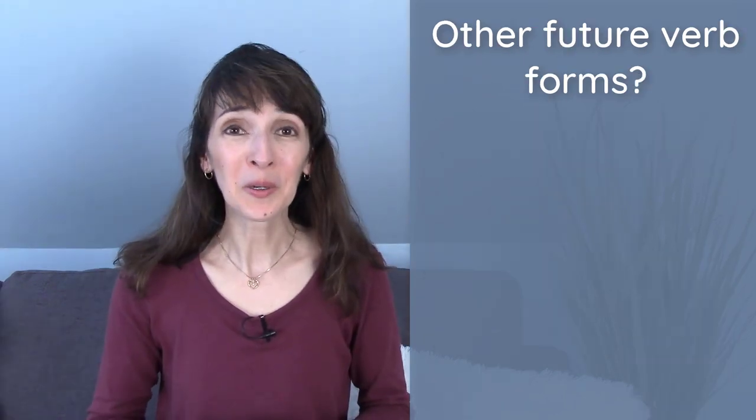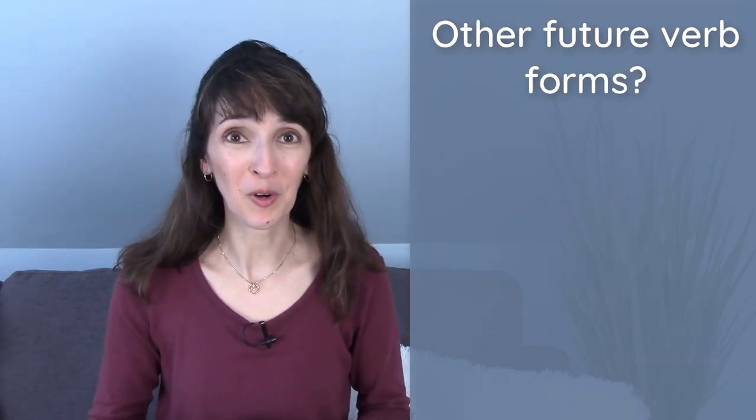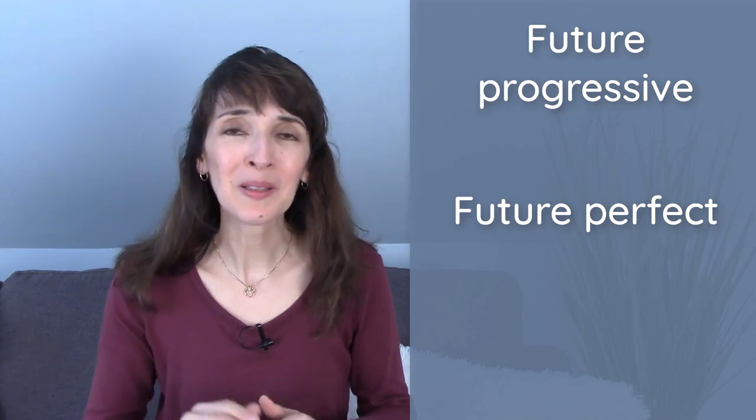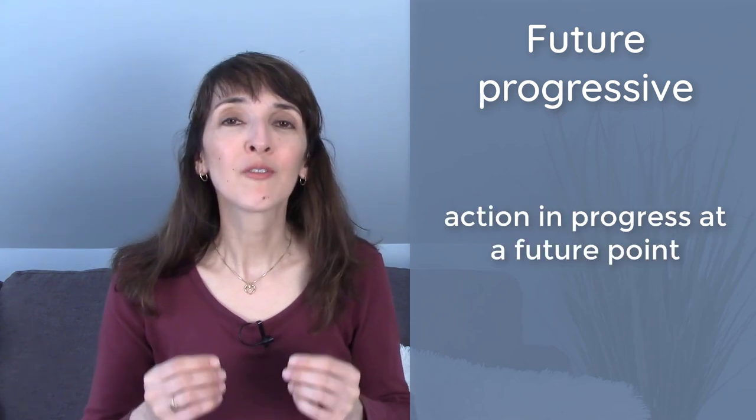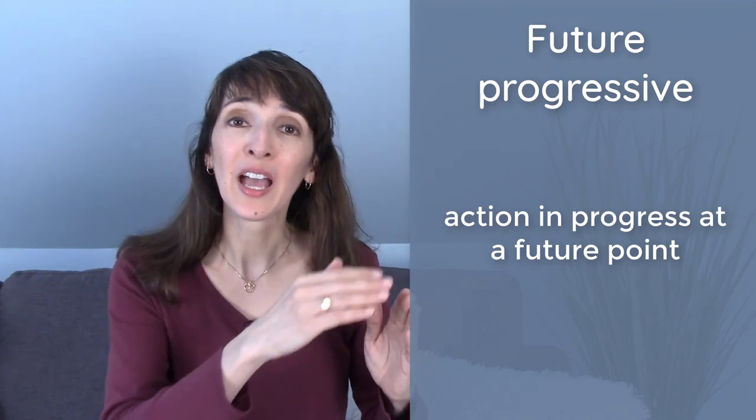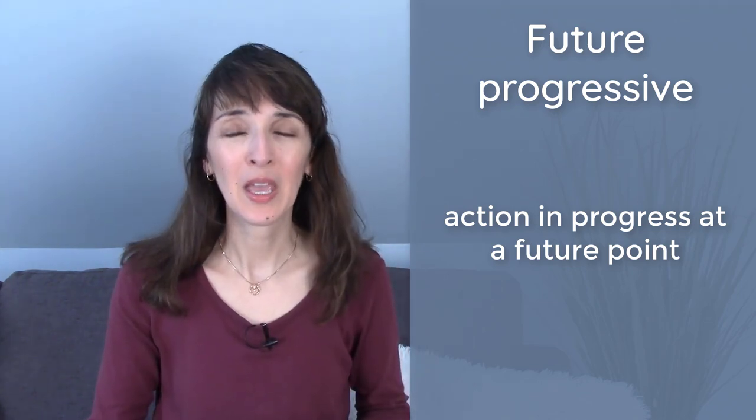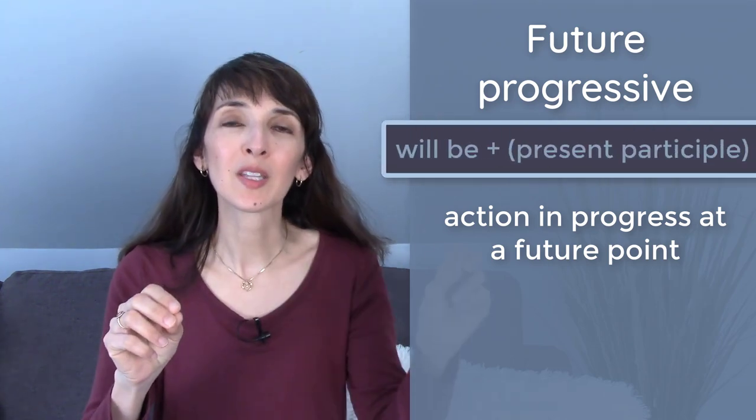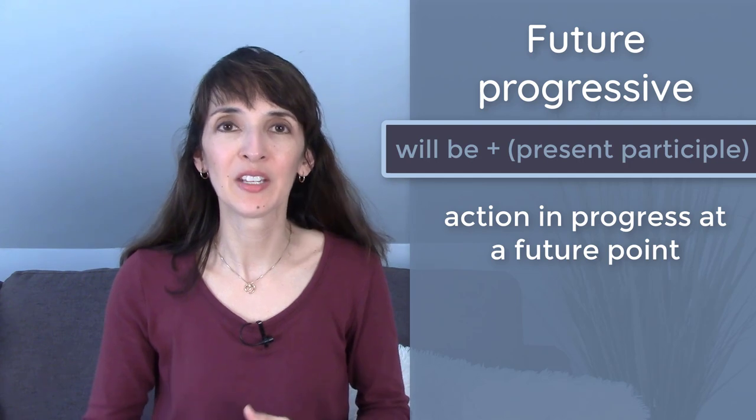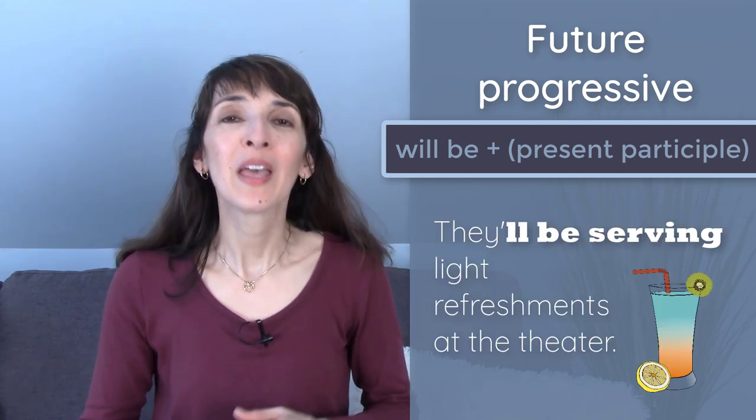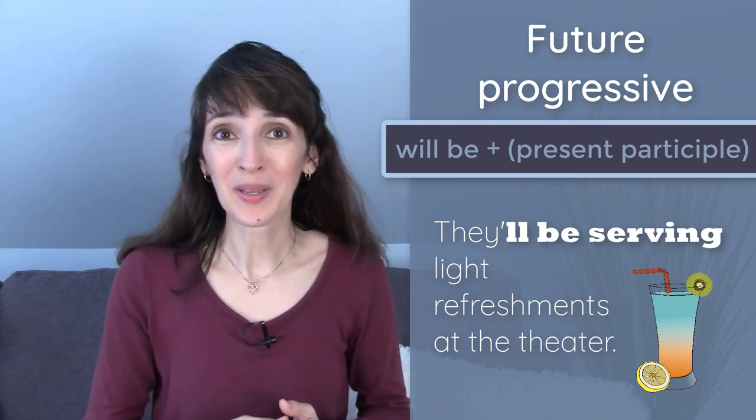You may be curious about other future verb forms. We can talk about the future progressive and the future perfect. But these verb forms are a little less common. The future progressive refers to an action in progress at a future point in time. There are two possible forms. Will be plus the present participle, the -ing form. We won't eat before the show. They'll be serving light refreshments at the theater.